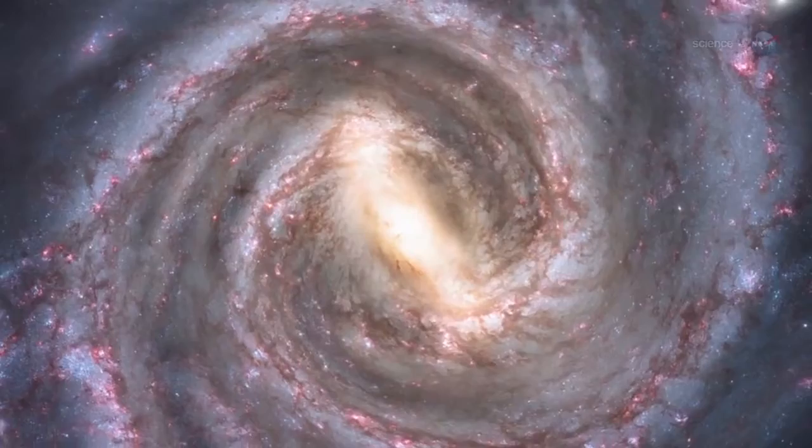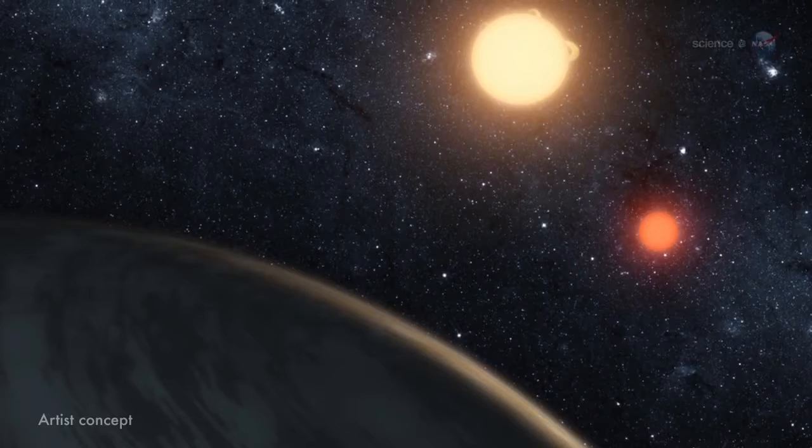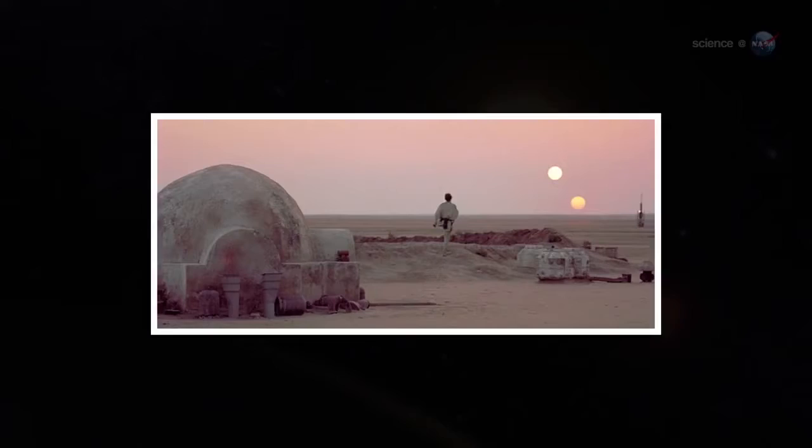Back in 2011, astronomers were amazed when NASA's Kepler spacecraft discovered a planet orbiting a double-star system. Such a world, they realized, would have double sunsets and sunrises, just like the fictional planet Tatooine in the movie Star Wars. Yet, this planet was real.